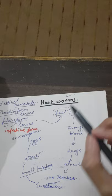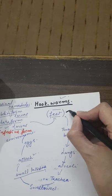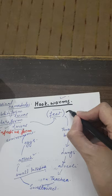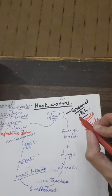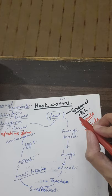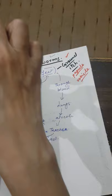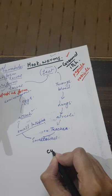At the point where filariform larvae enter the feet, there is a phenomenon called ground itch — this appears frequently in exams. Ground itch is a papule or vesicle at the site on the skin of the feet where the filariform larvae enter. The clinical term for this skin condition is cutaneous larva migrans.